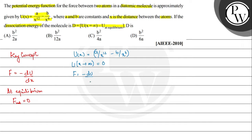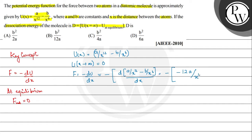Since F is the negative differential of the potential energy function, it is given as minus times the differential of (a/x¹² minus b/x⁶), which gives 12a/x¹³ minus 6b/x⁷. This simplifies so that the force is 12a/x¹³ minus 6b/x⁷.